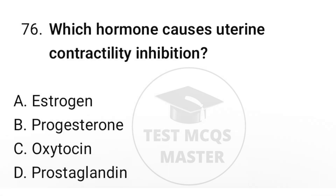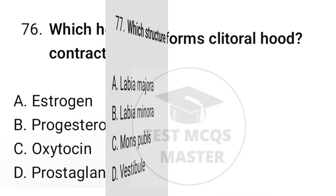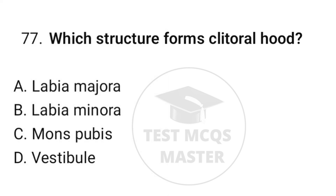Question number seventy-six: which hormone causes uterine contractility inhibition? The correct option is B, progesterone. Question number seventy-seven: which structure forms the clitoral hood? The correct option is B, labia minora.